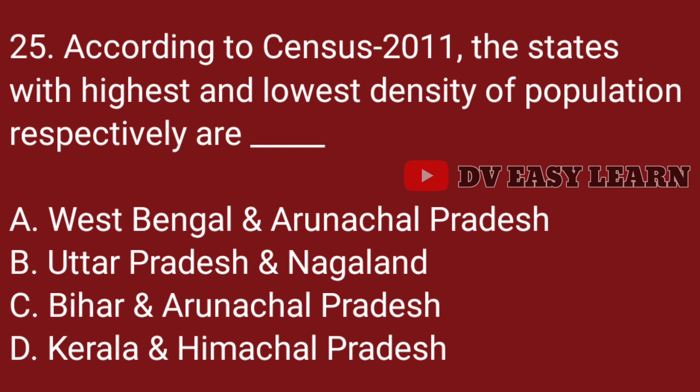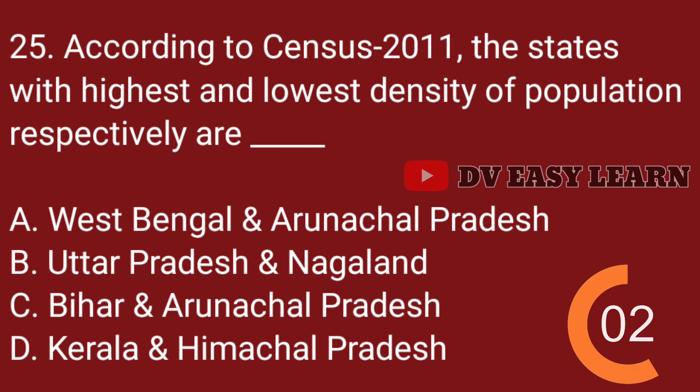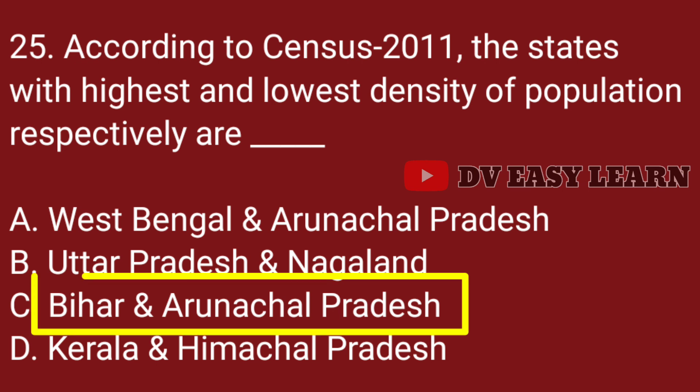Question no. 25. According to the census 2011, the states with the highest and lowest density of population respectively are: Correct answer: Bihar and Arunachal Pradesh.